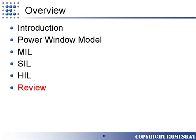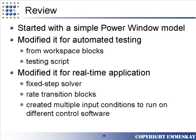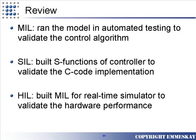Now it's time for a review of what we've learned over the course of this tutorial. We started with the simple Power Window model provided by the MathWorks. We then modified it to allow for some automated testing by changing some of the toggle switches to from workspace blocks. We then created some script for that testing. We also modified the model to run with real-time applications by changing it for fixed step solvers and adding some rate transition blocks. We also allowed for multiple input conditions so that we could run with different software. We began with an MIL and ran the model in an automated testing environment to test the logic in the control algorithm.